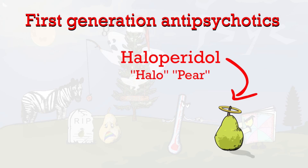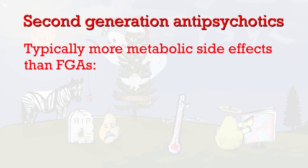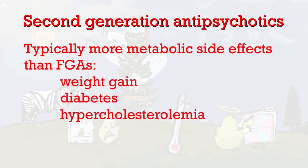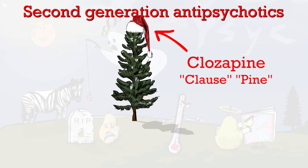Second-generation antipsychotics tend to cause more metabolic side effects than first-generation antipsychotics, such as weight gain, diabetes, and hypercholesterolemia. This scene covers 11 second-generation antipsychotics. The first is clozapine, represented by the Santa Claus hat on the pine tree — 'clozapine.'